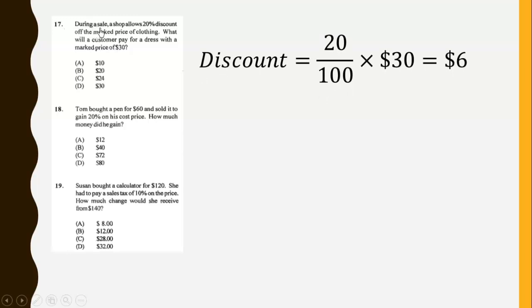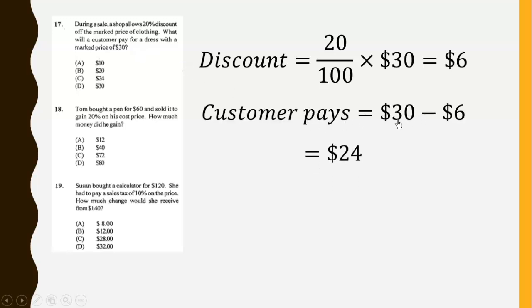During a sale, a shop allows 20% discount off the marked price of clothing. What will a customer pay for a dress with a marked price of $30? The discount is 20% of $30, which gives $6. The customer will pay $30 less $6, which is $24. Alternatively, the customer pays 80% of $30, which also gives $24.